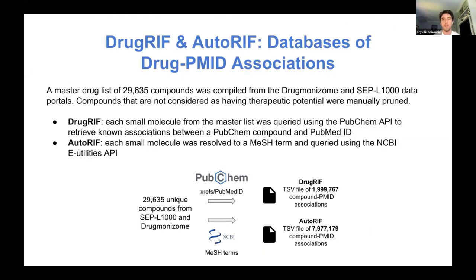There are two underlying databases that provide DrugShot with drug-to-PubMed ID associations, termed DrugRIF and AutoRIF. For the creation of both databases, we compiled a master list of drugs and small molecules from two existing lab resources: the side effect prediction portal L1000 and Drugmanizam, which is a drug set enrichment analysis portal.